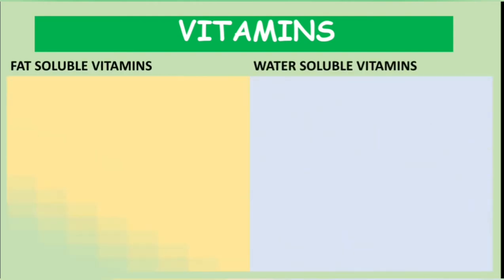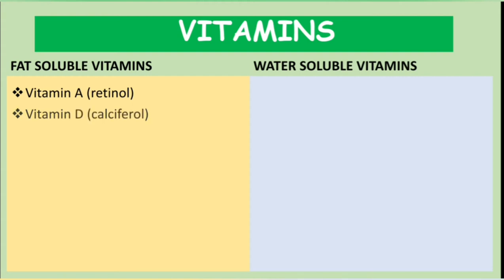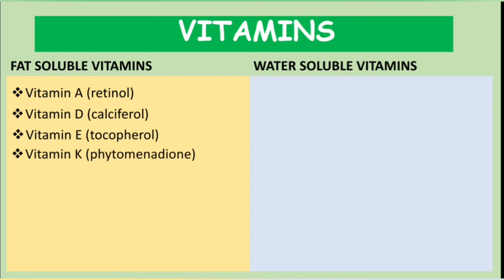There are two groups of vitamins: water-soluble vitamins and fat-soluble vitamins. Starting with fat-soluble vitamins: the first is vitamin A, also known as retinol. The second is vitamin D, also known as calciferol — our bodies can synthesize vitamin D. The third is vitamin E, also known as tocopherol. And last, vitamin K, also known as phytomenadione.